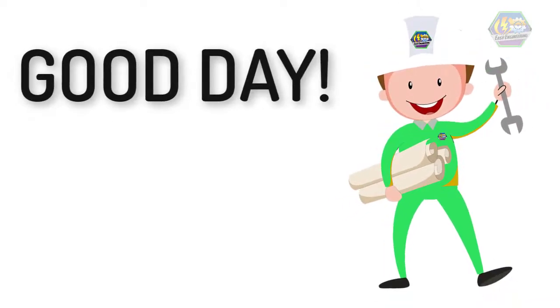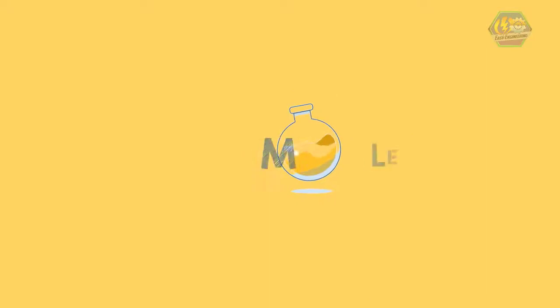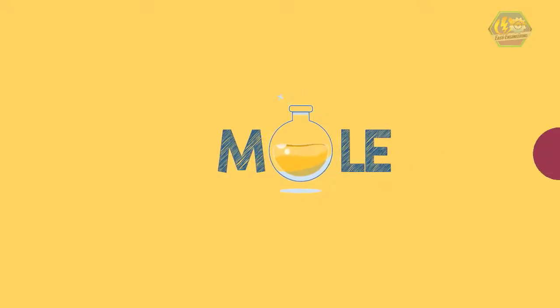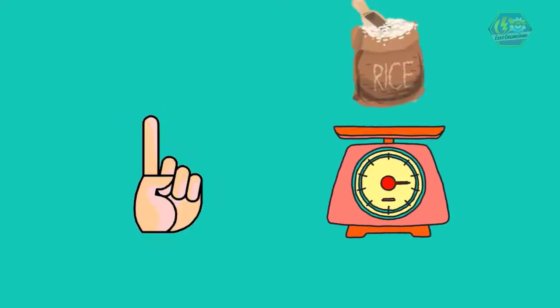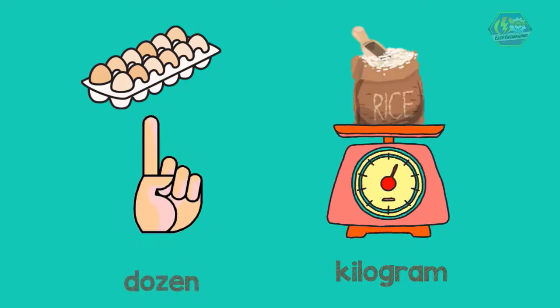Good day learners, this is Easy Engineering. This time we're going to talk about stoichiometry and the mole. In our daily lives we measure things by counting or weighing. We weigh rice but we count eggs. We use mass units like kilogram and counting units like a dozen to express the amount of things.